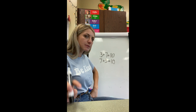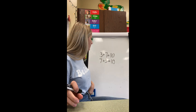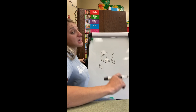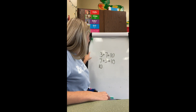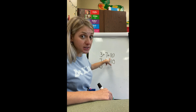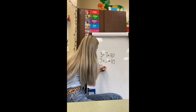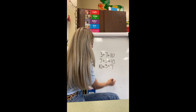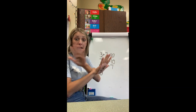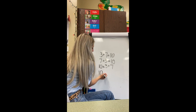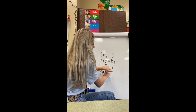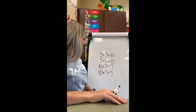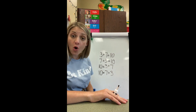So what else can we do? We can write some more number sentences with these three numbers: three, seven, and 10. What if we put the whole number first? We can do that. But the important thing to remember — if we put the whole number first, we have to put the equal sign next, because the equal sign is always next to the whole number. And we can use commutative property here too. We can say 10 equals 3 plus 7, and then commutative property: 10 equals 7 plus 3. How many expressions did we just write with those three numbers? One, two, three — we just wrote four expressions with those three numbers. Good job.